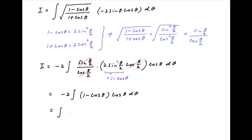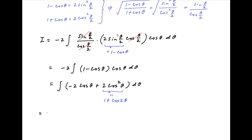This is equal to the integral of minus 2 cos theta plus 2 cos squared theta d theta. Note that 2 cos squared theta can be replaced with 1 plus cos 2 theta. Therefore, I is equal to the integral of minus 2 cos theta plus 1 plus cos 2 theta d theta.